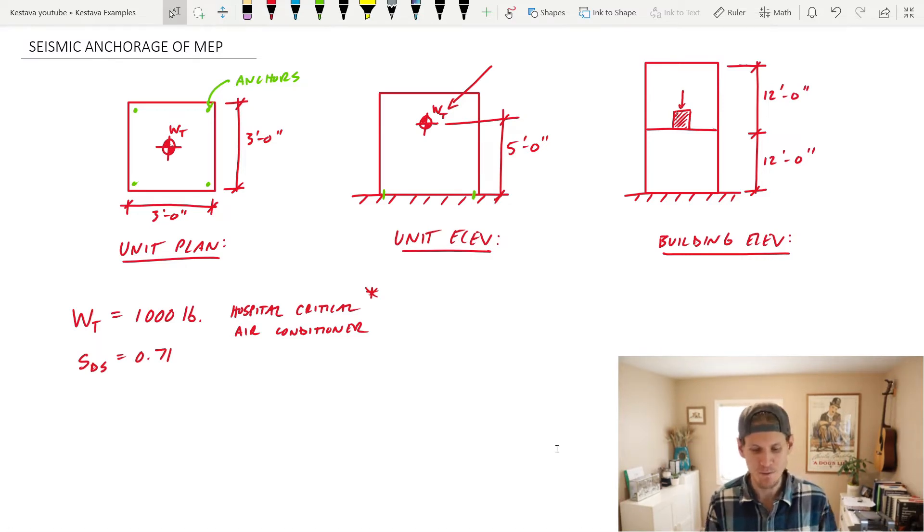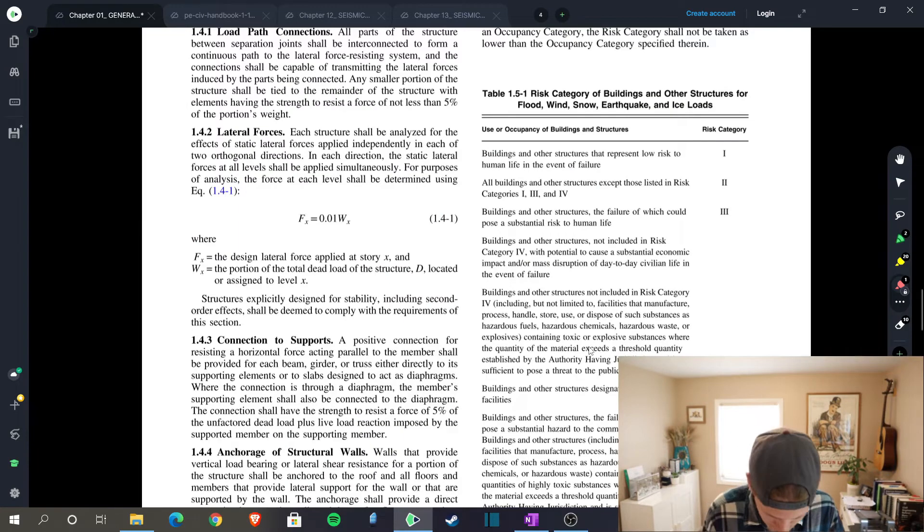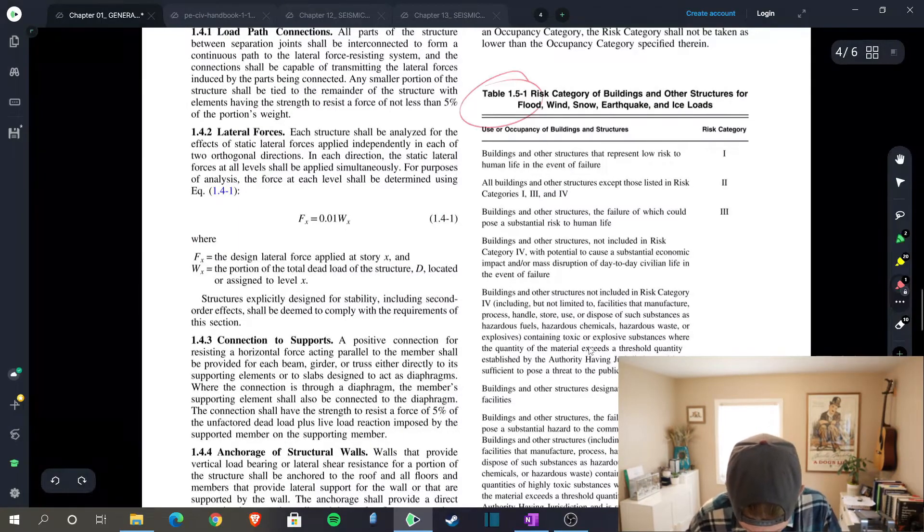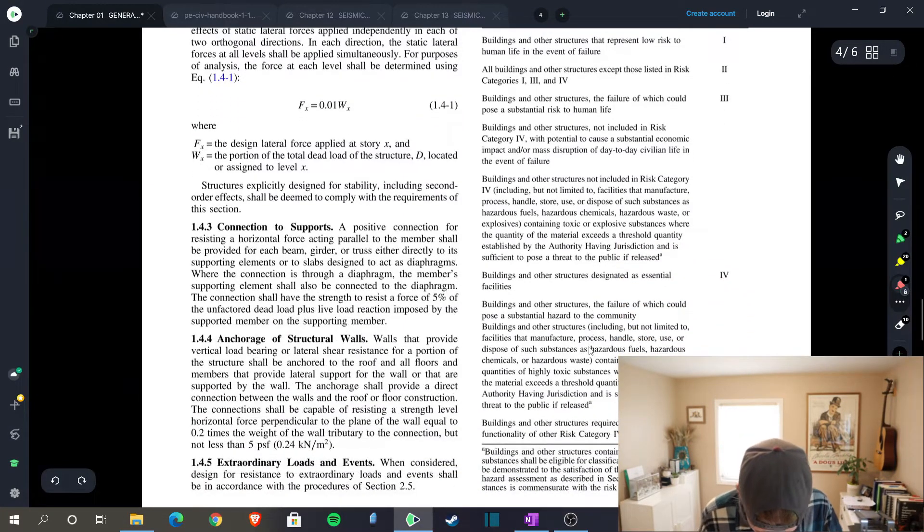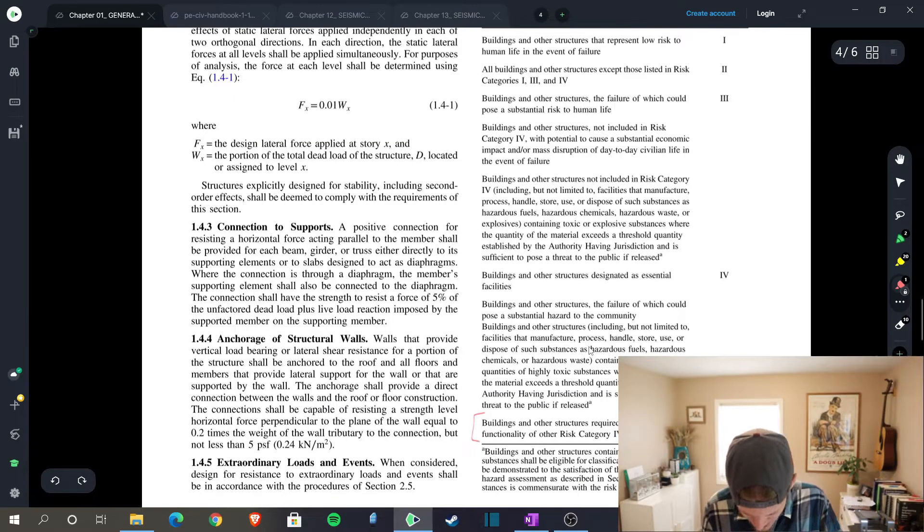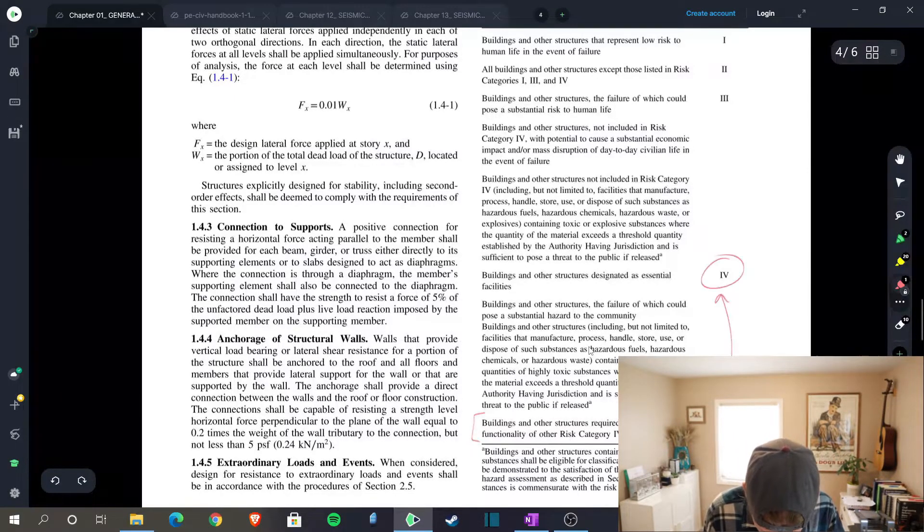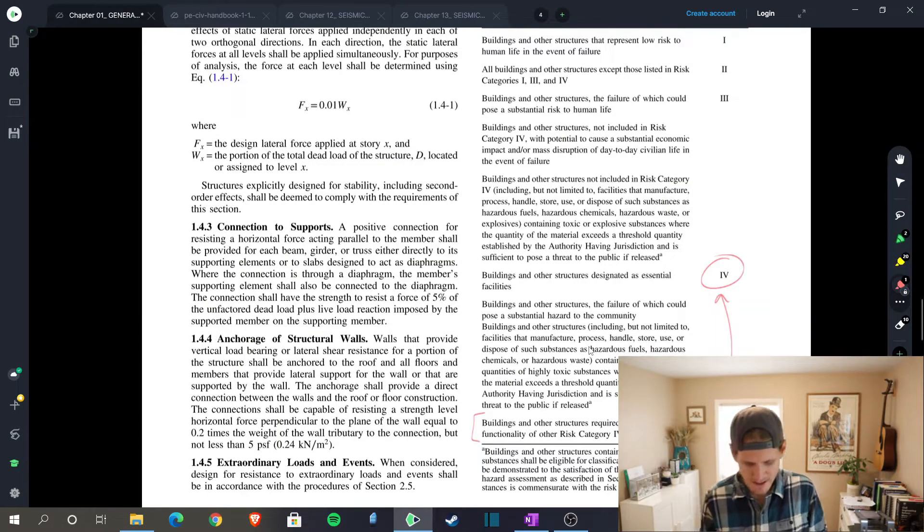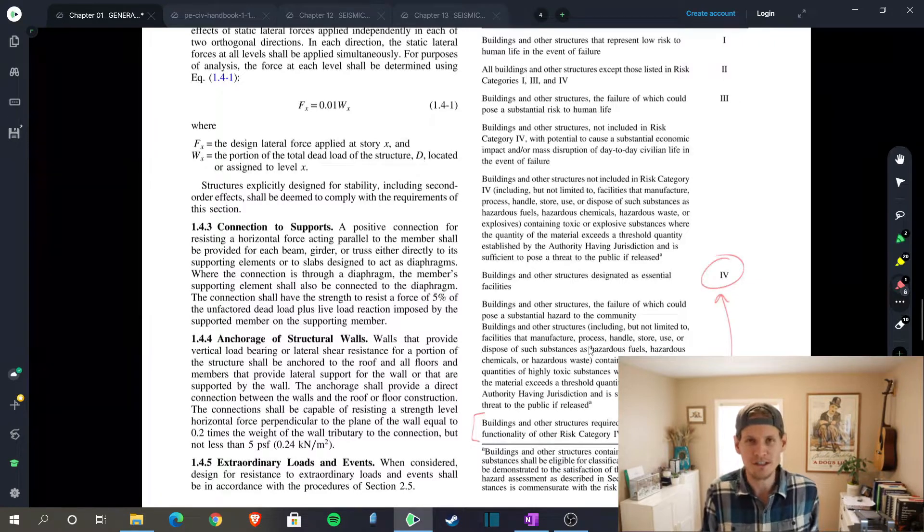So first, let's head to chapter one of the 7-16. Table 1.5-1 is where we find ourselves looking at risk categories based on our component type, and at the bottom, this is the bread and butter that we need from this section, which determines that we are risk category 4.